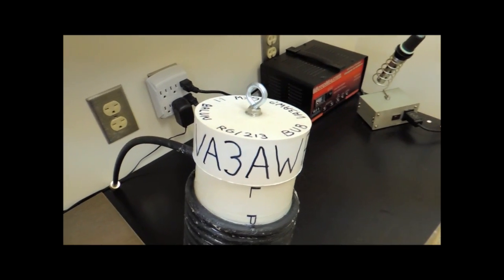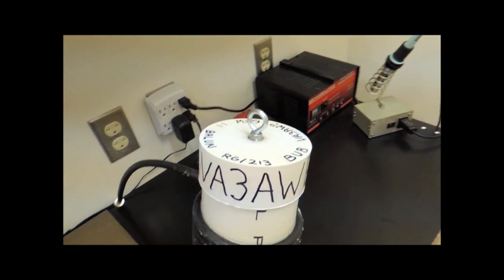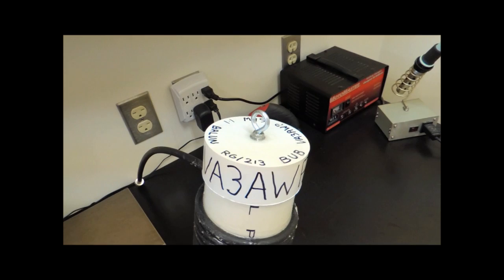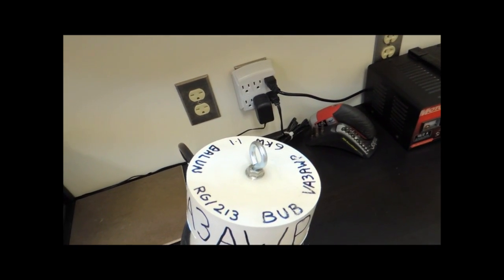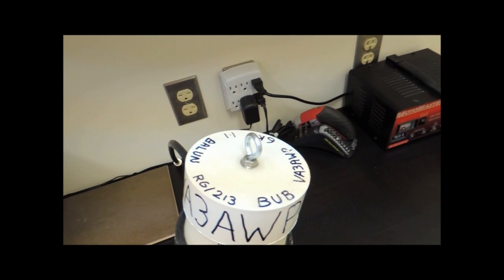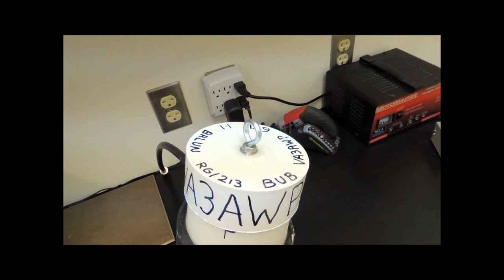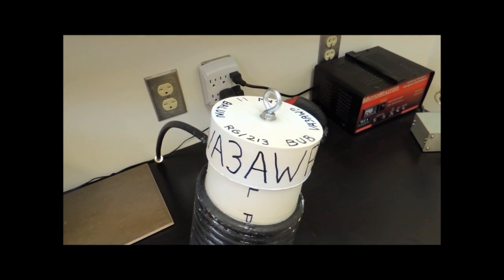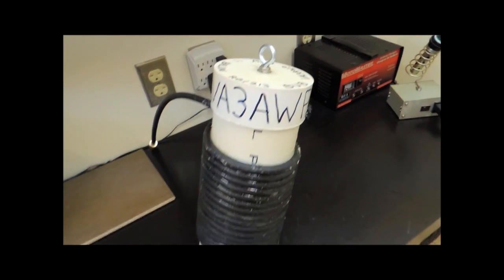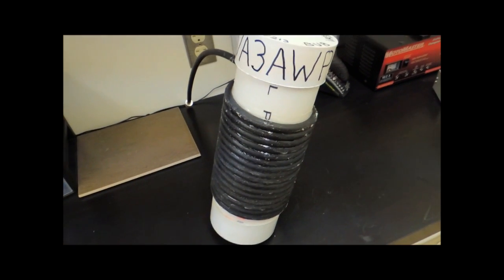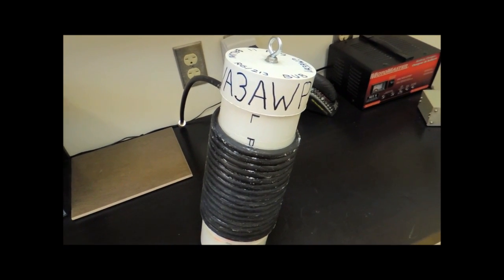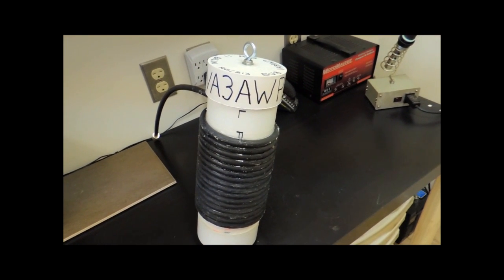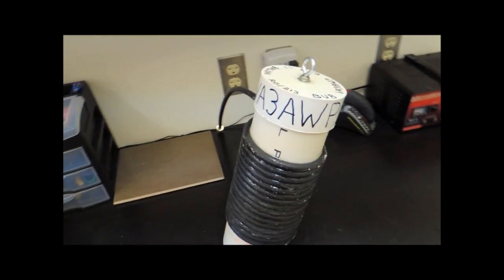This is the VA3 Alpha Whiskey Papa Big Ugly 1:1 Balun. It can handle six kilowatts with RG-213, apparently. Without it, I got a whole bunch of RF coming back down the coax cable into the shack. This works really well.